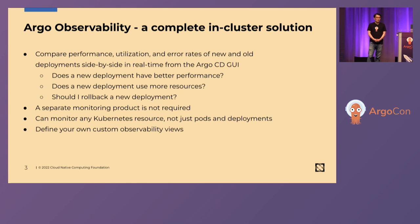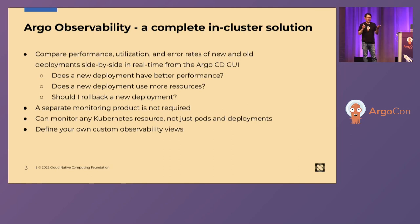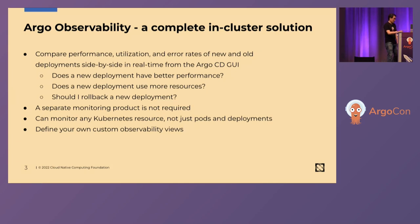And if those metrics don't look good, you can click a button and roll back that deployment right there — making it super easy for developers to perform these basic functions with the tools they normally use, like Argo CD.